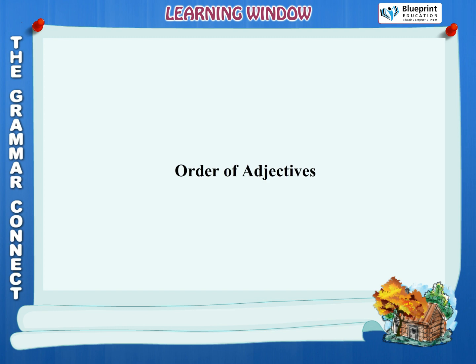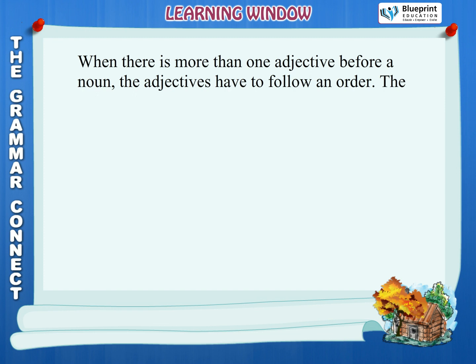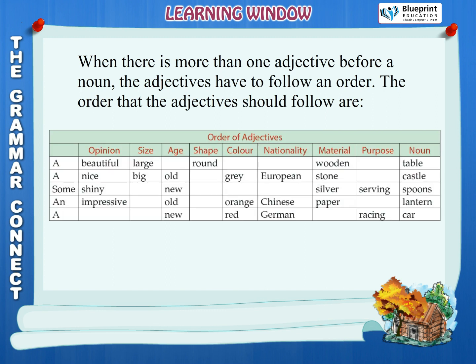Order of adjectives. When there is more than one adjective before a noun, the adjectives have to follow an order. The order that adjectives should follow is: opinion, size, age, shape, colour, nationality, material, purpose — then the noun.